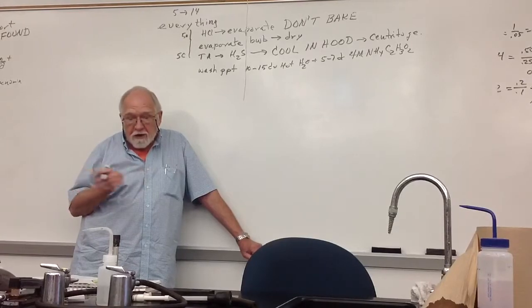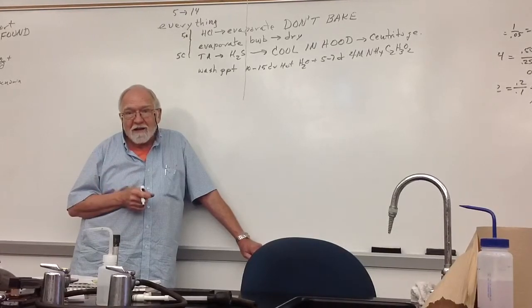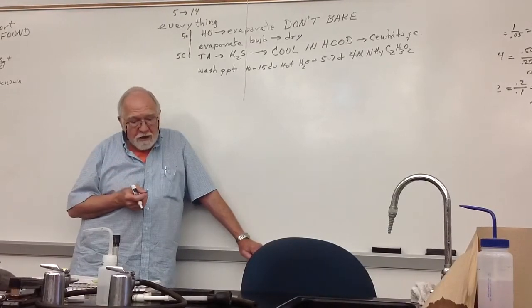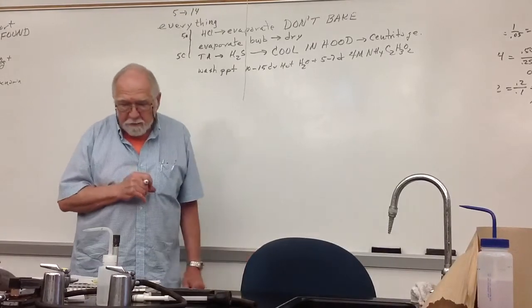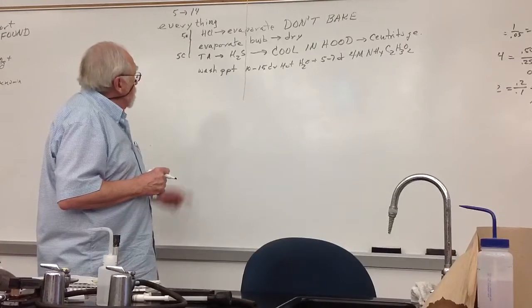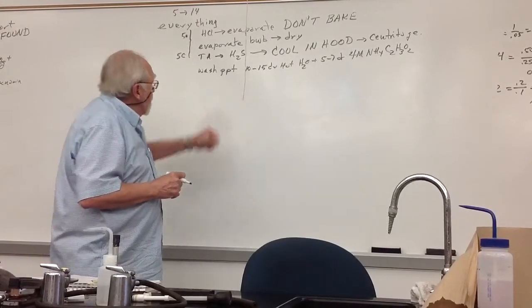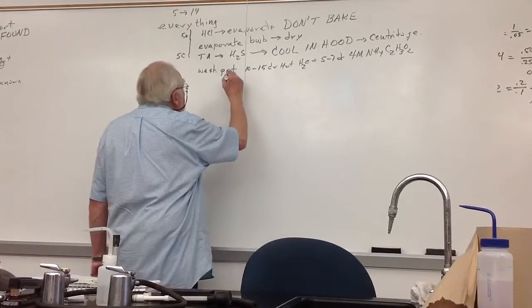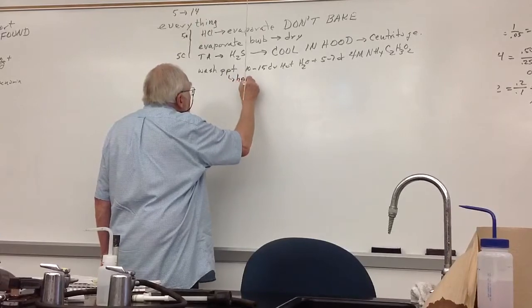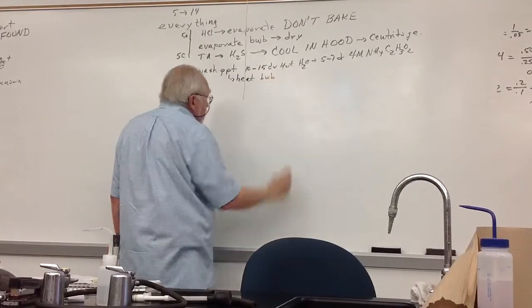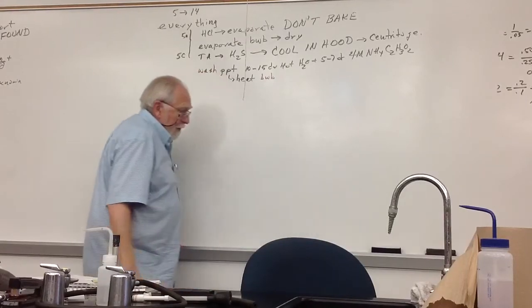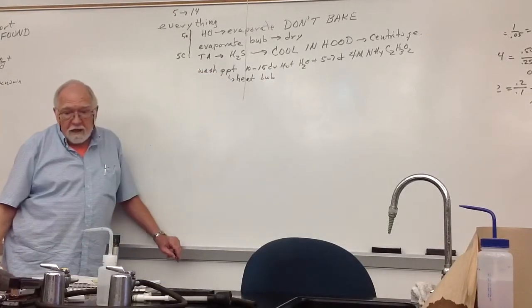You mix it right in your test tube with the precipitate, and then you put it in the boiling water bath to get it hot. That's the washing liquid. You don't have to mix it up separately and then add it to your precipitate. So you do that. You heat. Then you centrifuge and decant. You do that twice.